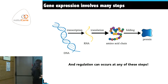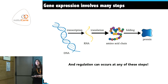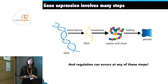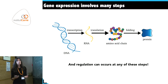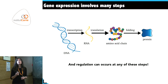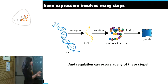The process of gene expression is very complicated — it contains many steps. We go from DNA to mRNA, the mRNA is then translated into protein, and the protein has to fold into its three-dimensional structure. We have many steps, and regulation can occur at any of these steps.